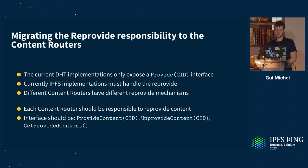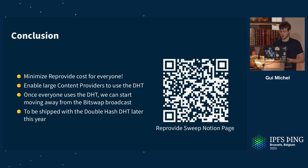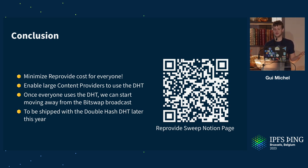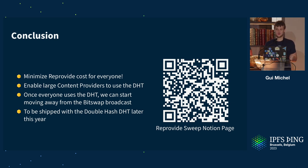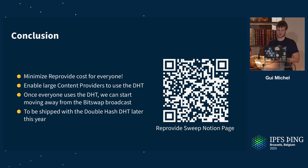So that was the explanation of how we can minimize the re-provide cost for everyone. It works especially well for large content providers, but it's also an optimization for a local Kubo node advertising content. It enables large content providers to use the DHT and move away from the BitSwap broadcast. We want to ship this along with the double hash DHT later this year — if you switch to the double hash DHT, you get the extra benefit of re-providing in a much more efficient way. There's a Notion page you can check for updates.